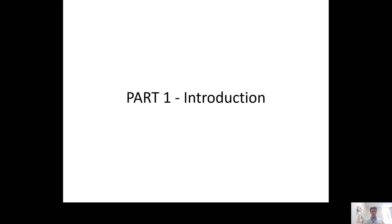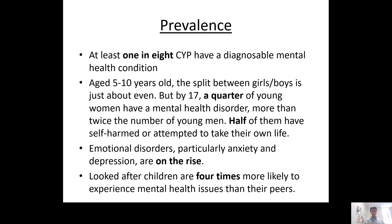Part one is an introduction to this topic. The prevalence of mental health conditions in children and young people is startling and increasingly reported to be growing. At least one in eight children and young people will meet a diagnosis for a mental health condition. In younger children the split between girls and boys is about even, but towards middle adolescence — which we now understand extends to about age 25 — a quarter of young women will meet criteria for a mental illness, double that of young men, and half of those girls will have self-harmed or attempted to take their own life, which is a fairly shocking statistic.